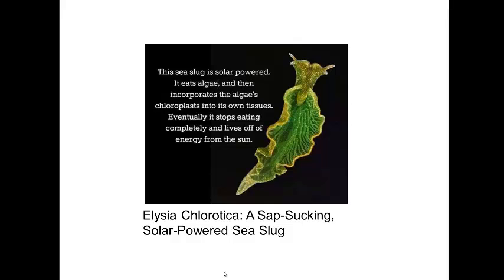Just for fun, when we think of chloroplasts and photosynthesis, we typically think of plants. But there are a few animals that have chloroplasts in them — a salamander, some aphids, and the sea slug. Let's take a look at and talk about the sea slug.